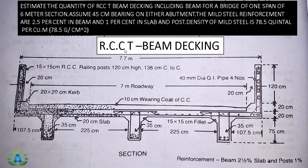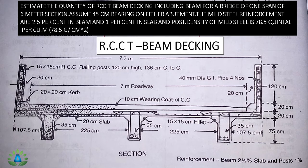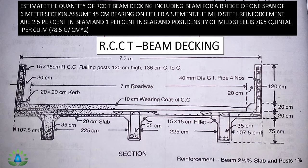Today we are going to do the estimation of the RCC T-beam decking having a span of 6 meters and a bearing of 45 centimeters on either of the abutments. The mild steel reinforcement is 2.5% in the beam and 1% in the slab and posts. The density of mild steel is 78.5 quintal per cubic meter. The section has three T-beam ribs, six triangular fillets, railing posts, curves on both sides, a roadway of 7 meters, and 40 mm diameter GI pipes — four numbers on both sides.